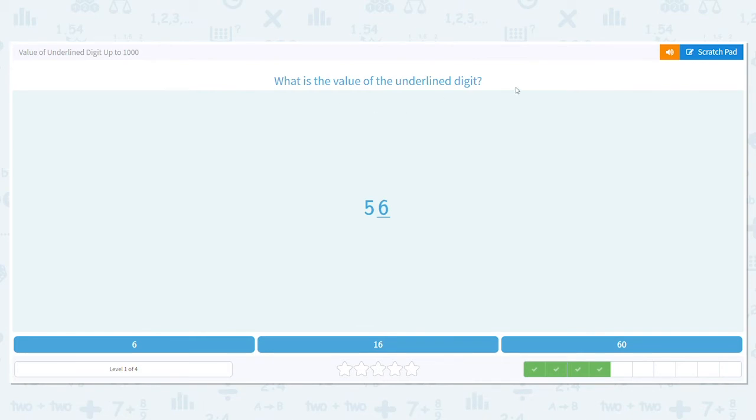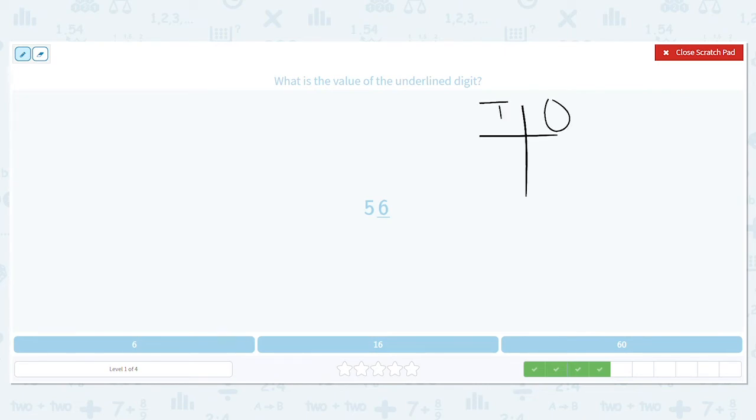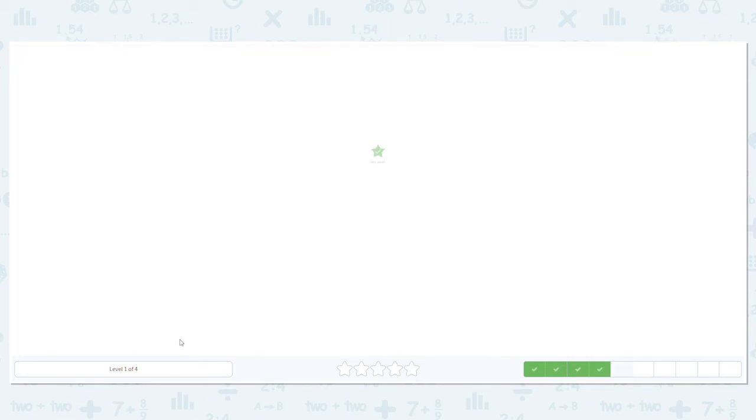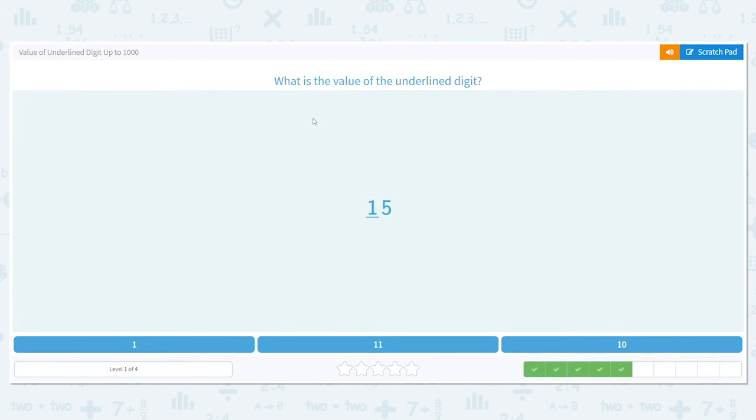How about here? 56. Last time we looked, it was the five which was in the tens place. This time we're looking at the six in the ones place. So six is in the ones. That's like saying I have six individual blocks. So what is the value of the six in the ones place? It just is what it is. It is six.